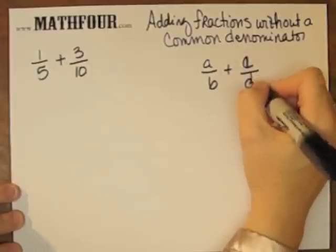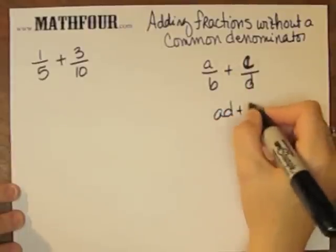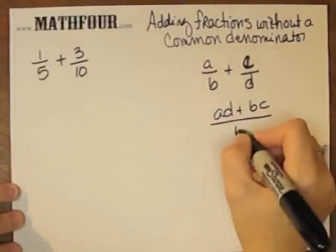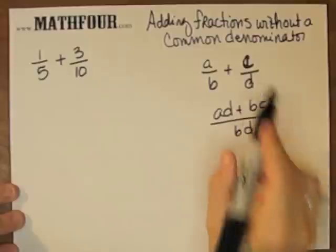This is a/b + c/d. AD plus BC over BD. So AD plus BC over BD.